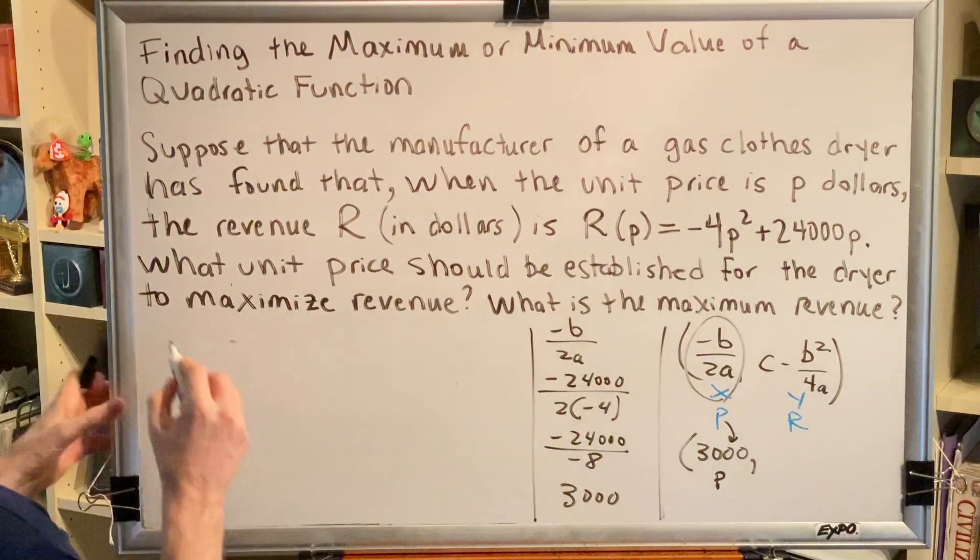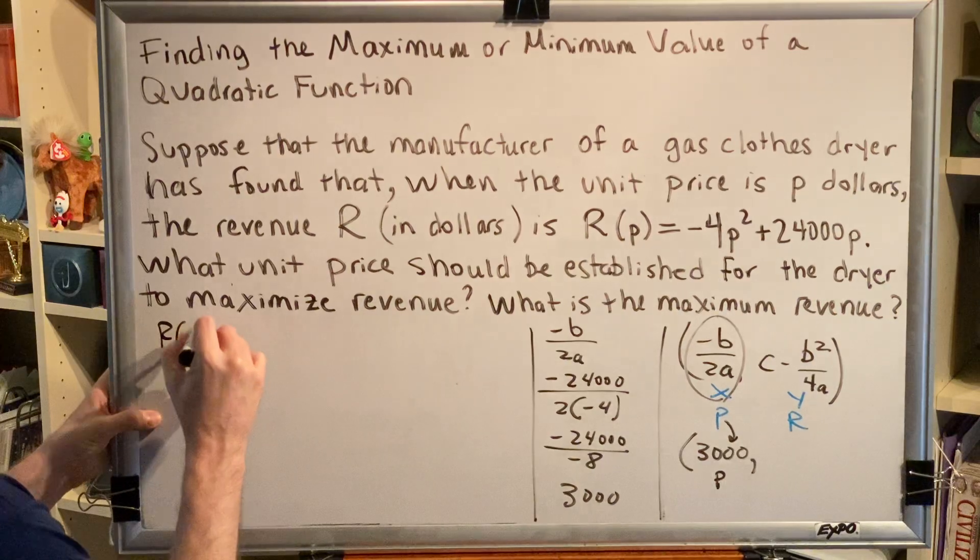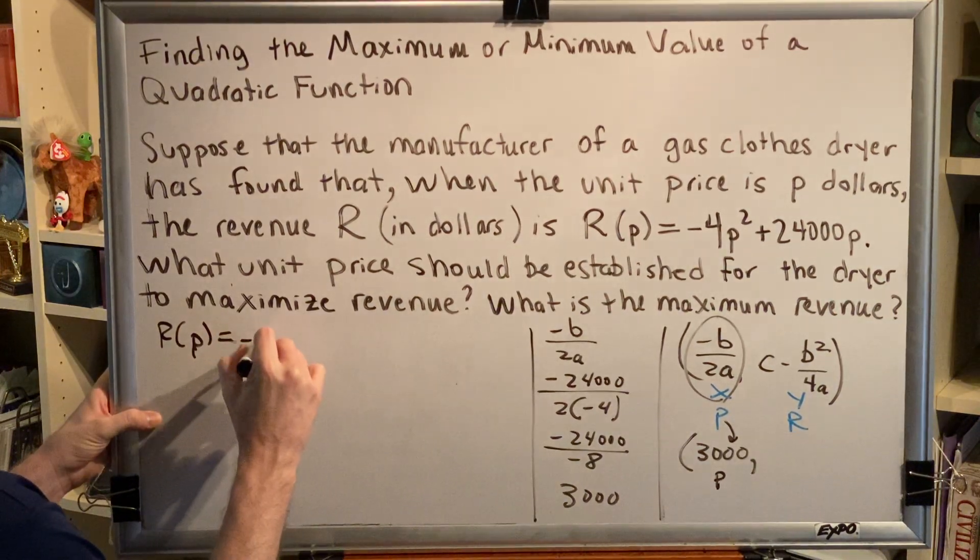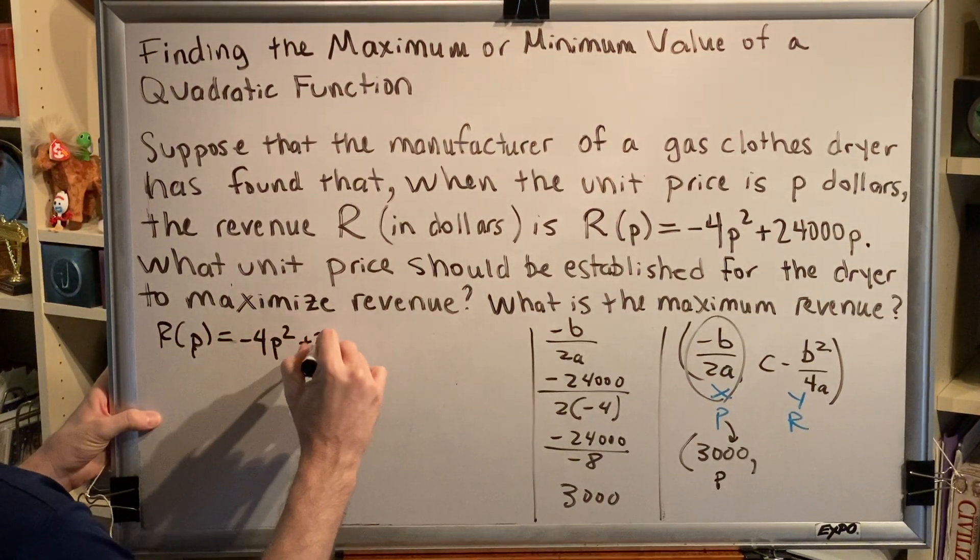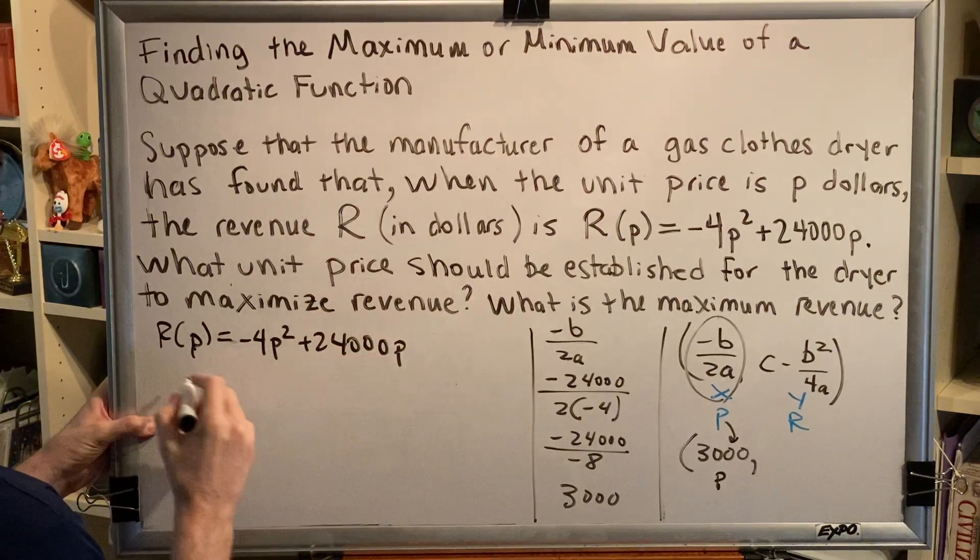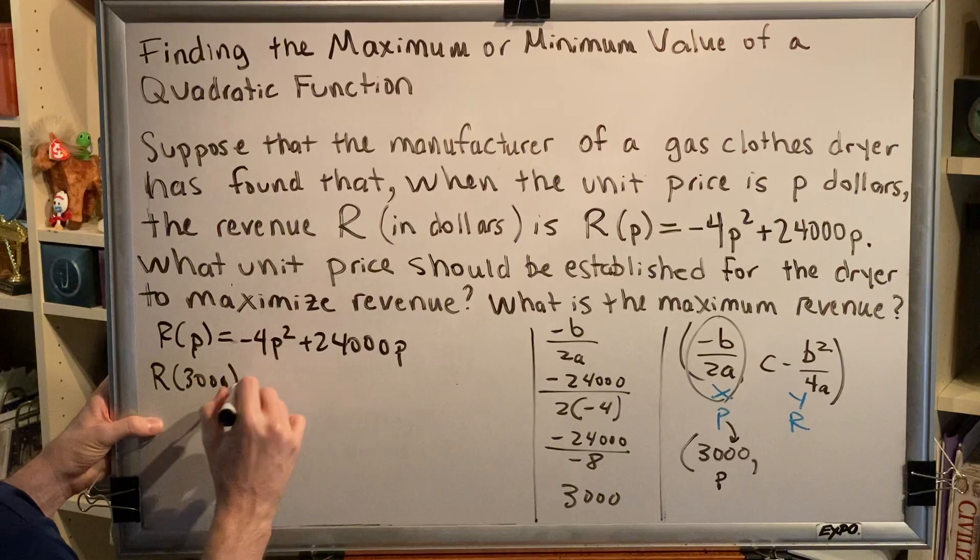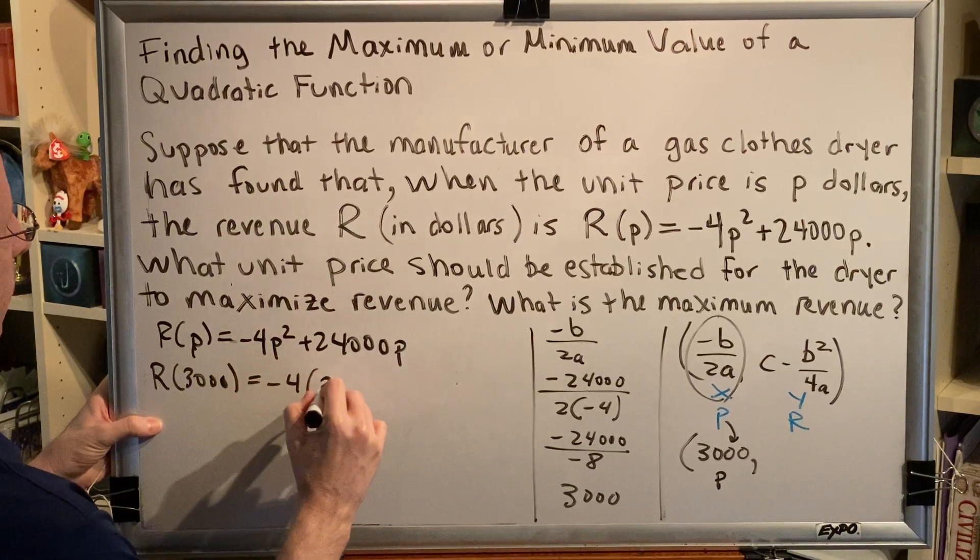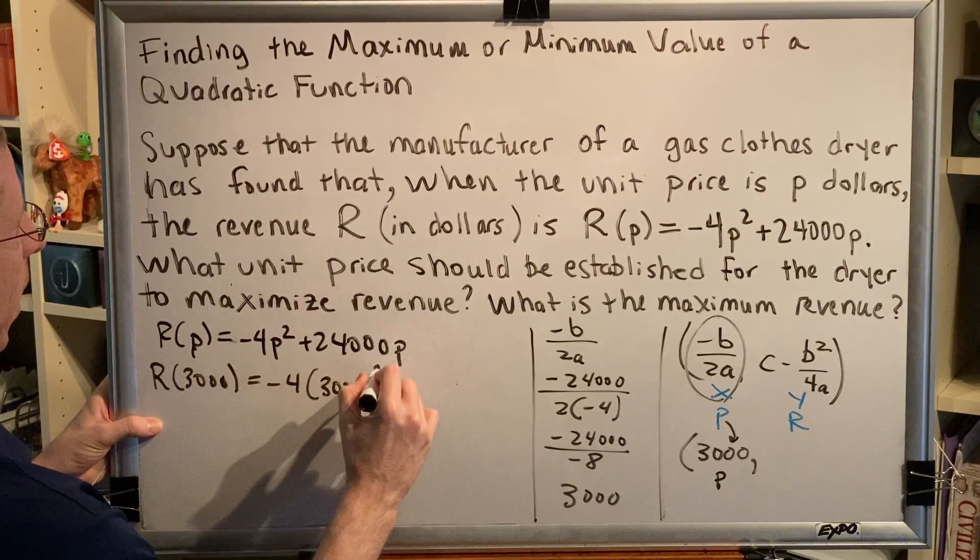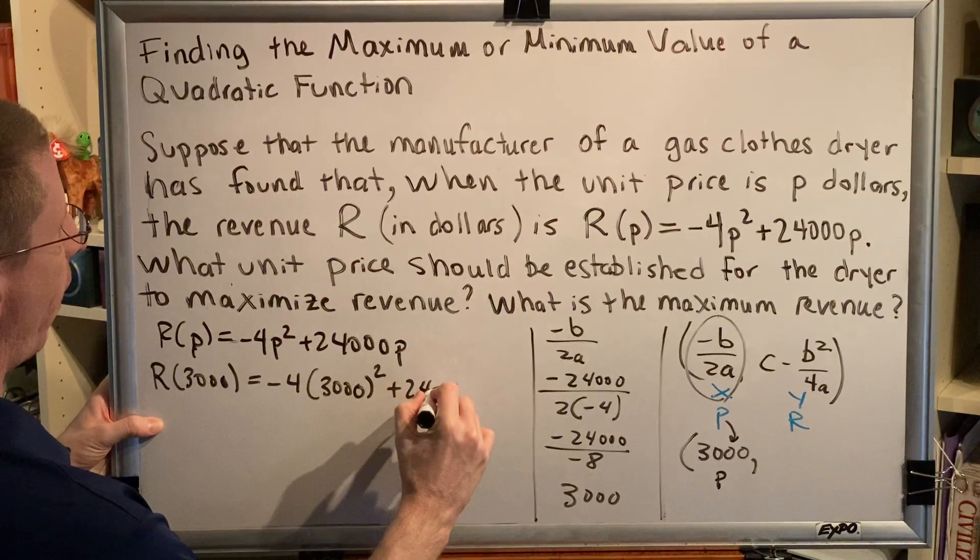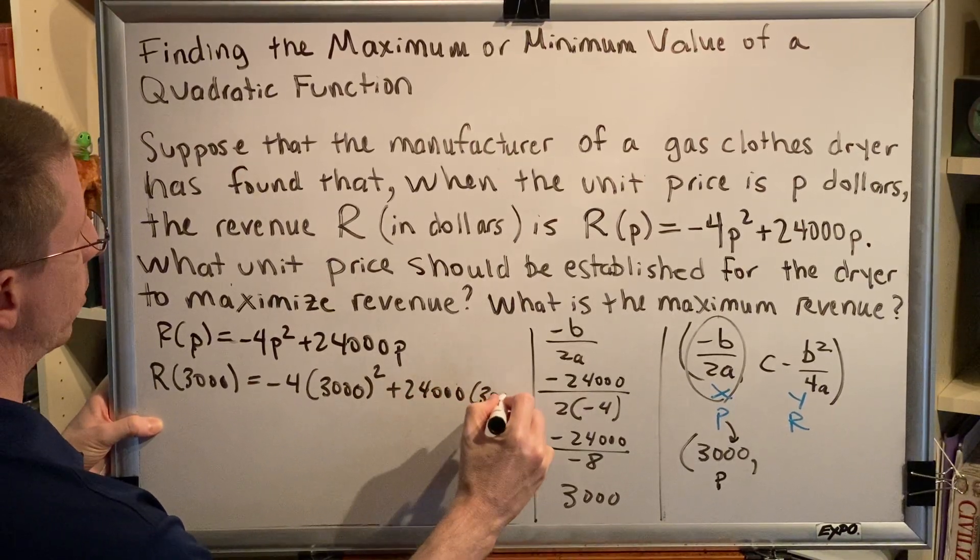All right, so we have r of p equals negative 4p squared plus 24,000p. Replacing every p with 3,000, we get r of 3,000 equals negative 4 times 3,000 squared plus 24,000 times 3,000.